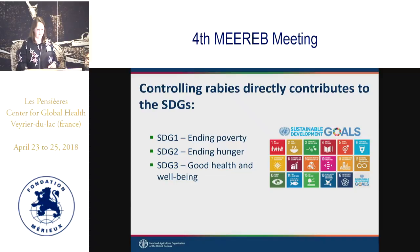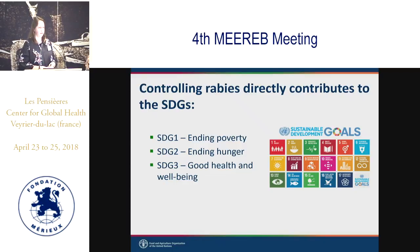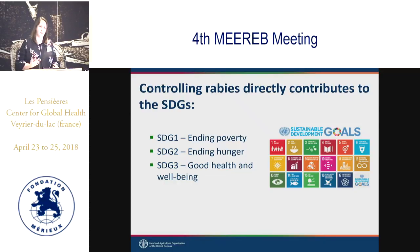Controlling rabies directly contributes to the Sustainable Development Goals, which is what we're all working towards. There's a set of 17 different goals with indicators aimed at eliminating poverty and hunger, improving health and wellbeing, and other topics. Controlling rabies contributes to SDG three, but we would also argue it helps for SDGs one and two on poverty and hunger.